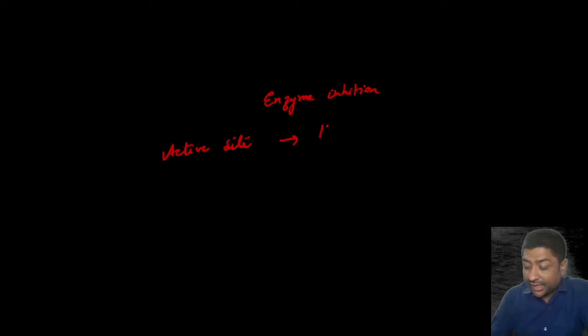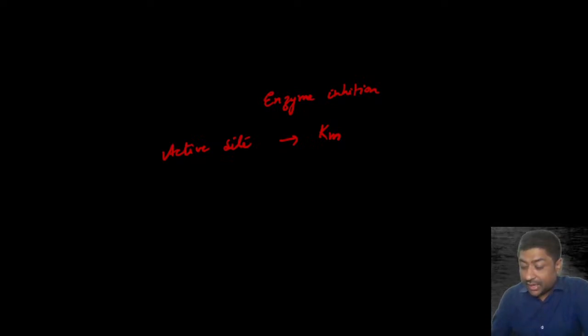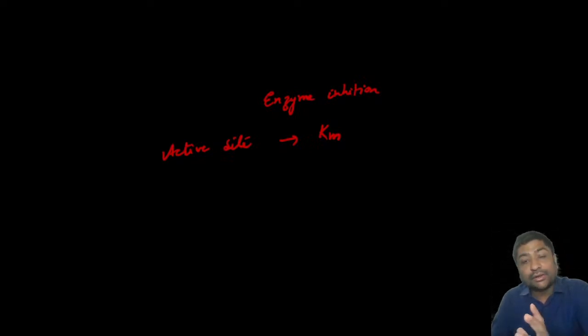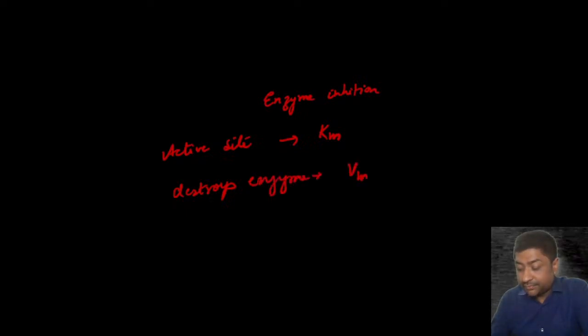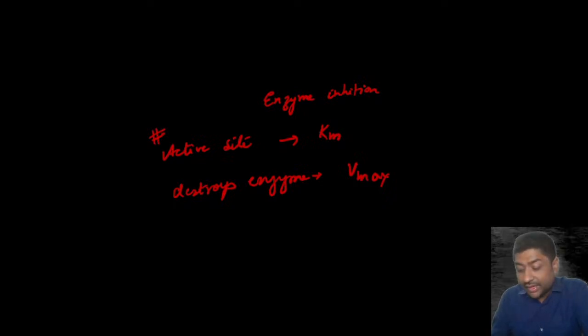When we talk about enzyme inhibition — anything which interferes with the active site will change the value of Km. Anything which interferes with the active site will change the Km. If it is not interfering with the active site, it will not change the Km. And anything which actually destroys the enzyme will change the Vmax. So: anything which interferes with the active site changes Km; anything which destroys the enzyme changes Vmax.